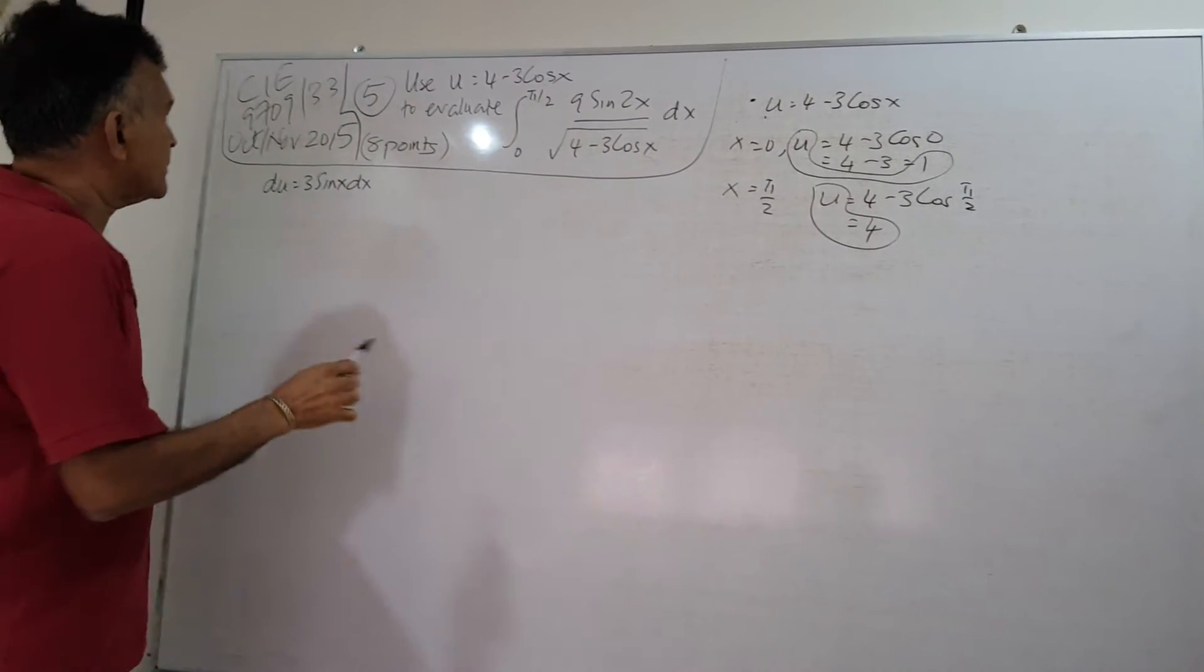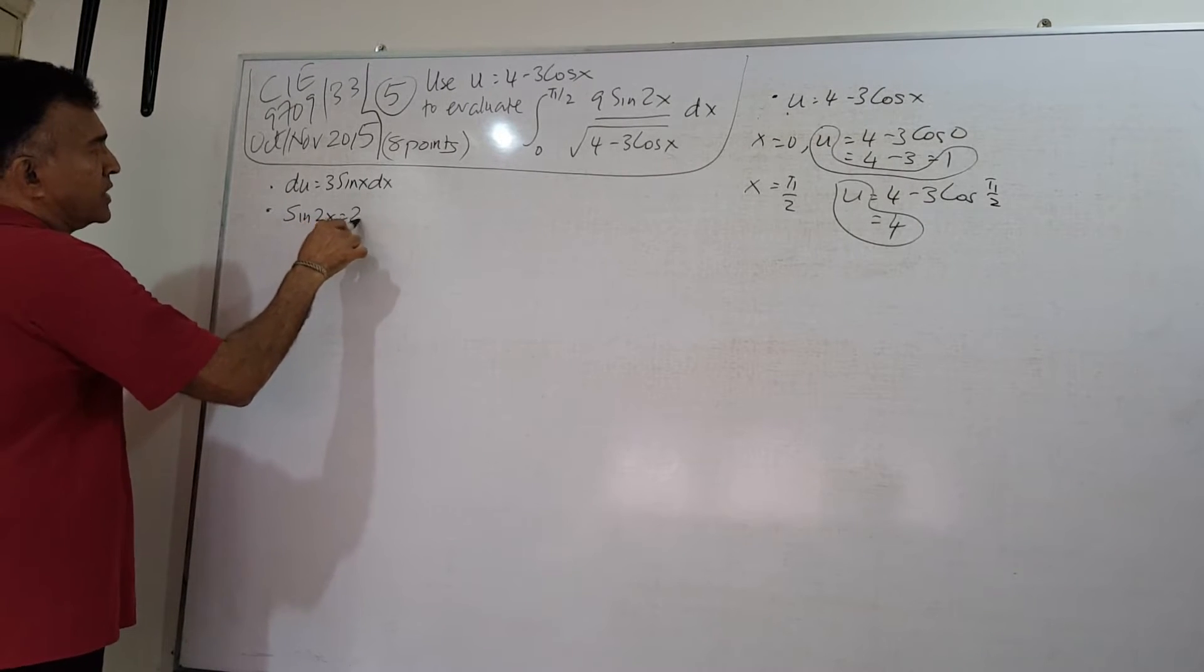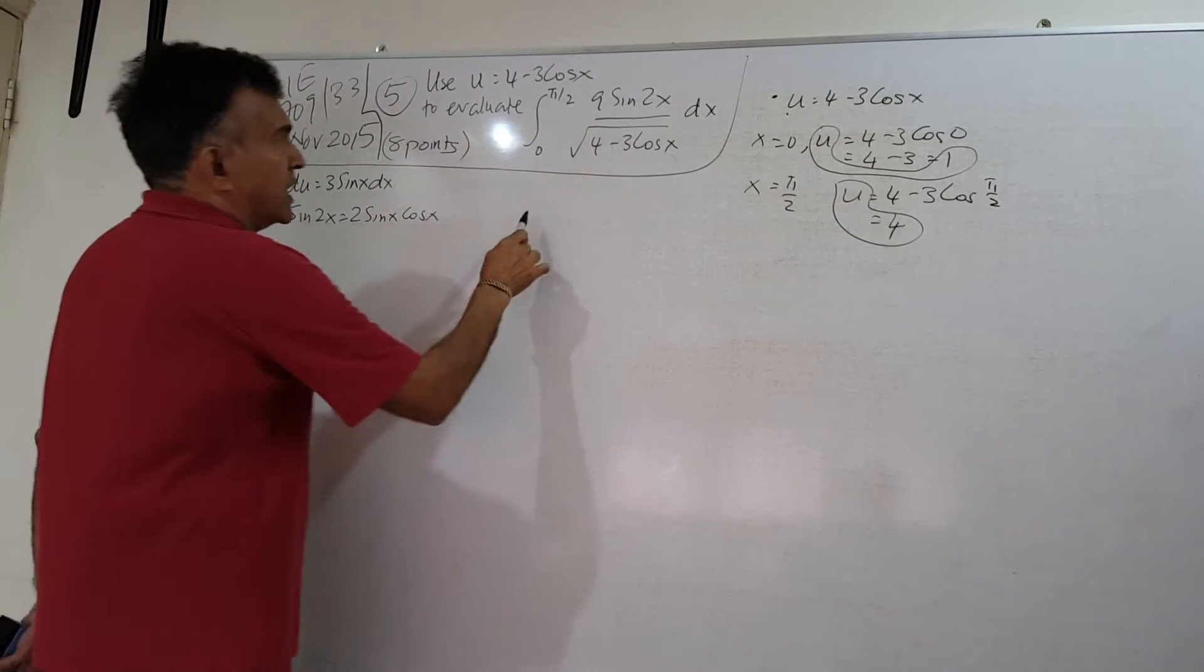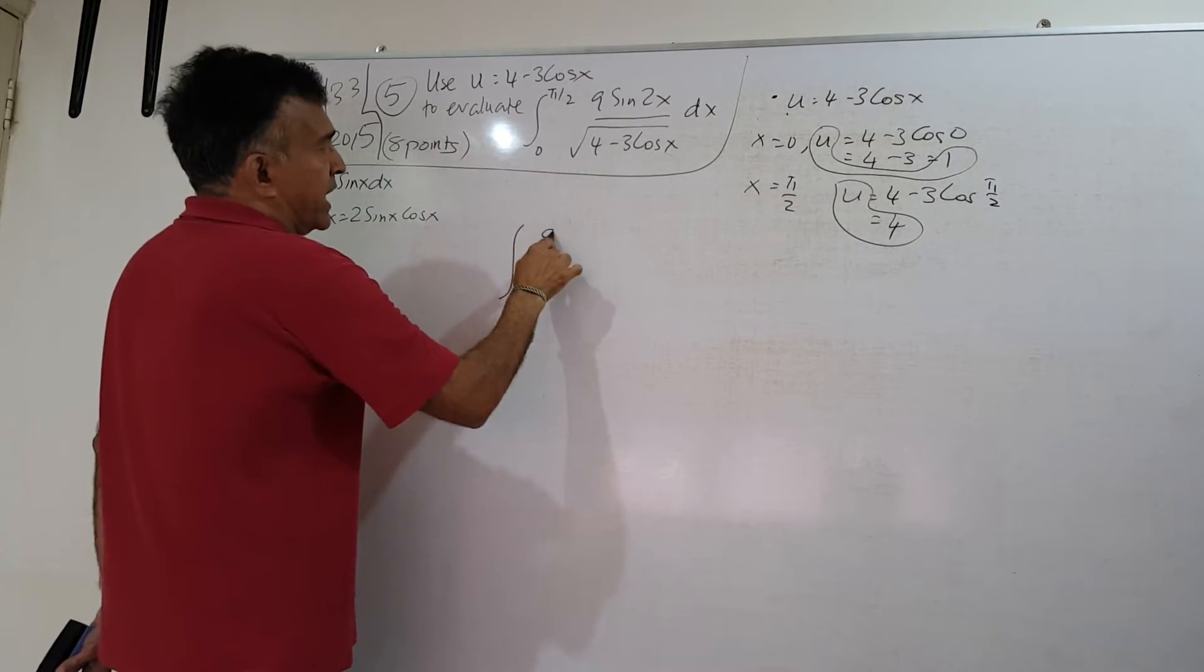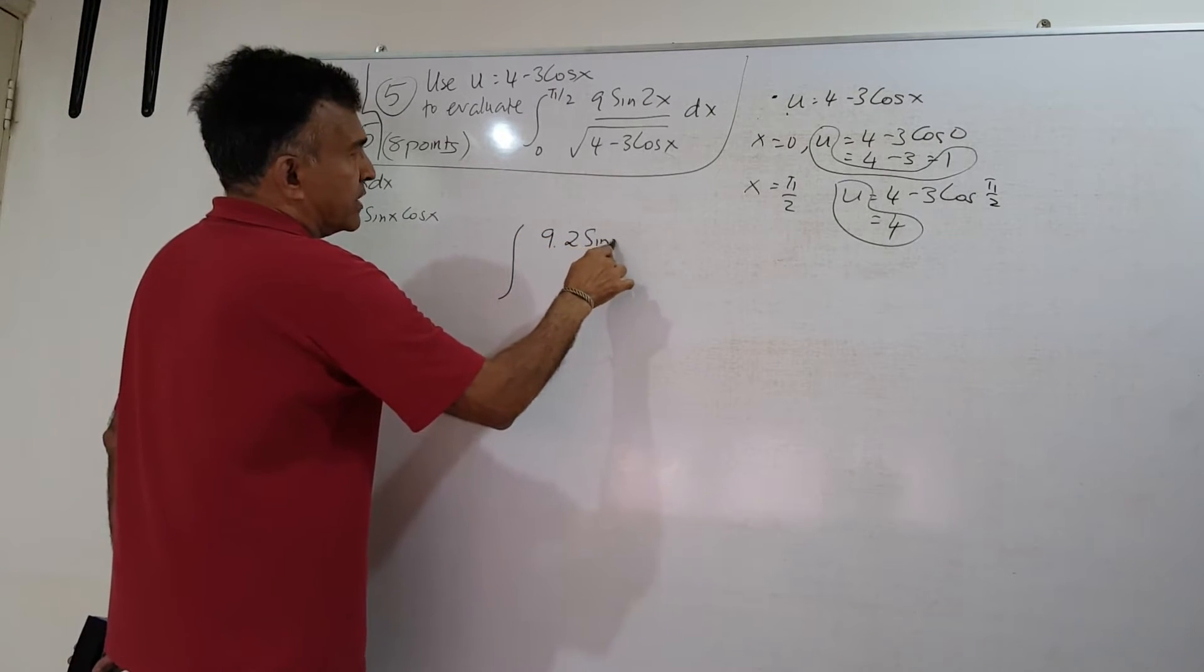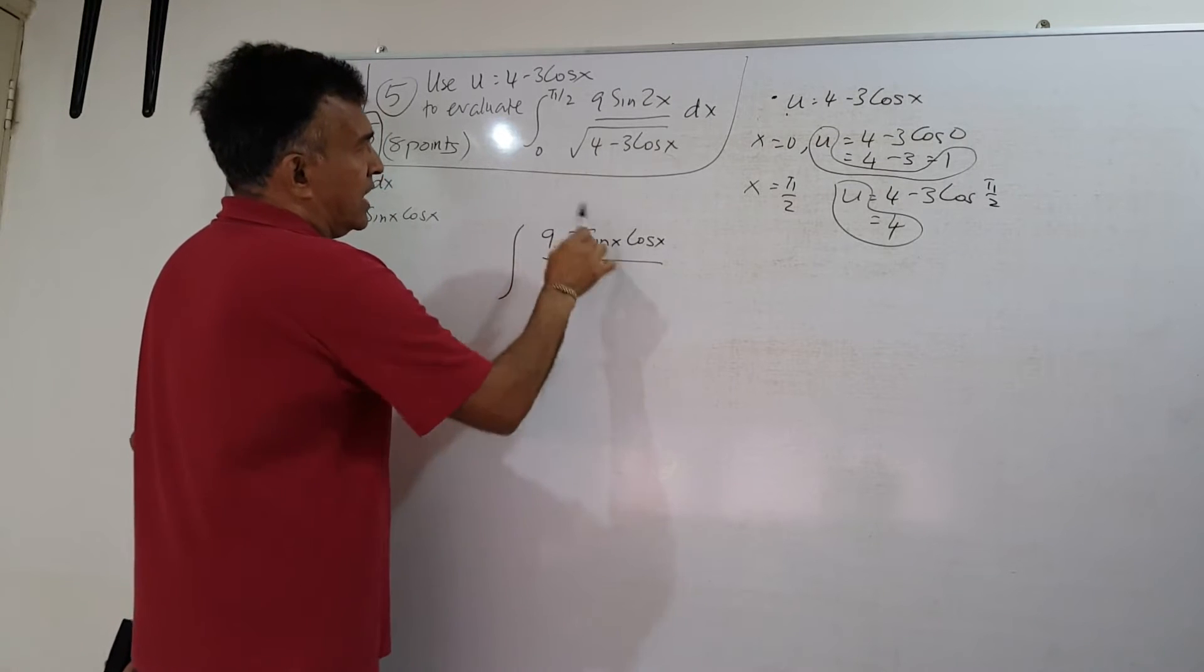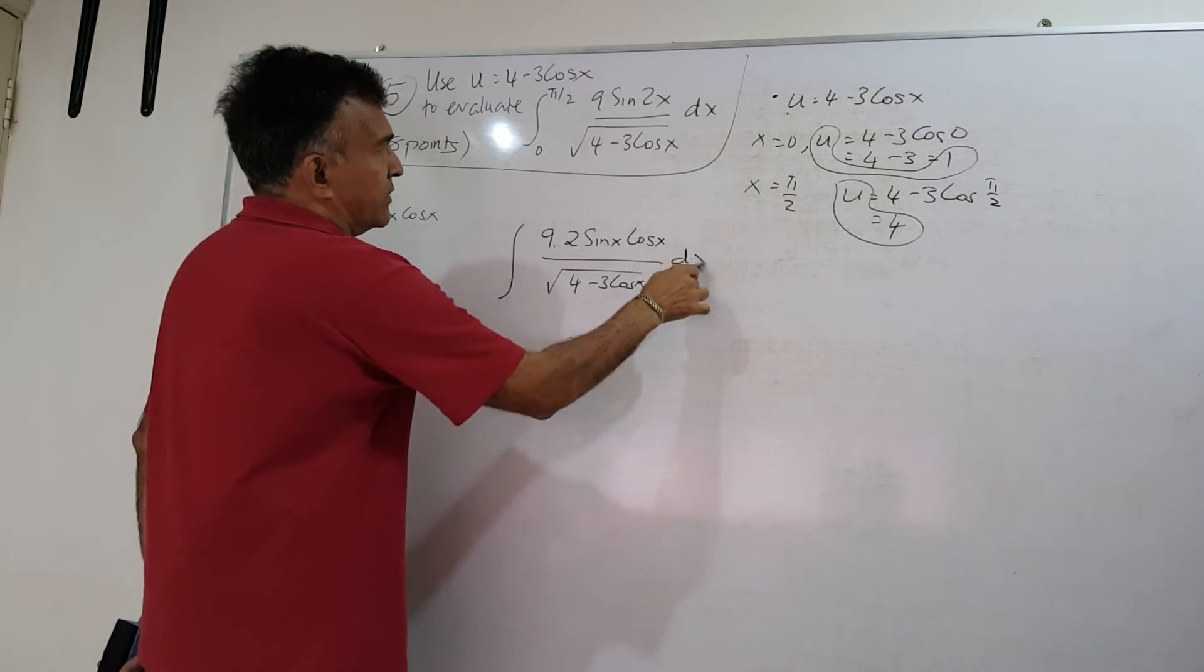What else do we need? We need some formulas. Take note. Sin 2x is 2 sin x cos x. So let's start with the problem. We have 9 sin 2x is 2 sin x cos x. Sin 2x. And at the bottom, we have the square root of 4 minus 3 cos x. And let's leave the dx here.